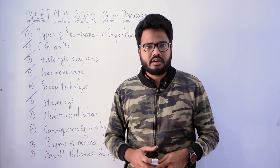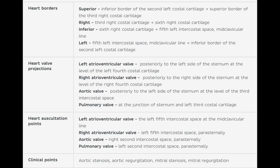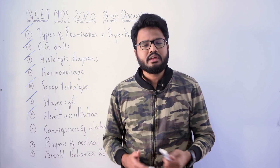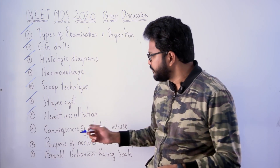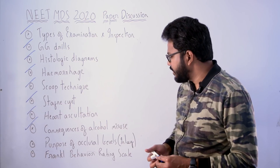Next question: heart auscultation. There are different regions where we auscultate different areas of the heart. You can review some literature pertaining to the same — there is an image showing different areas which can be used for auscultating different regions of the heart, along with a table with extensive information. Do go through it and let me know what the specific question is; we'll update the description if necessary.